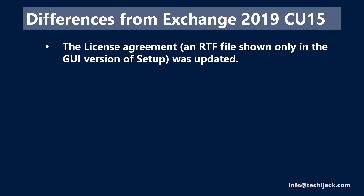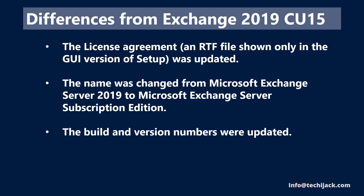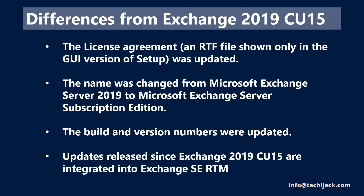The license agreement and RTA file are shown only in the GUI version of setup. The name was changed from Microsoft Exchange Server 2019 to Microsoft Exchange Subscription Edition, and the build and version numbers were updated. Updates released since Exchange 2019 CU15 are integrated into Exchange Subscription Edition RTM, as usually happens with every new CU update.